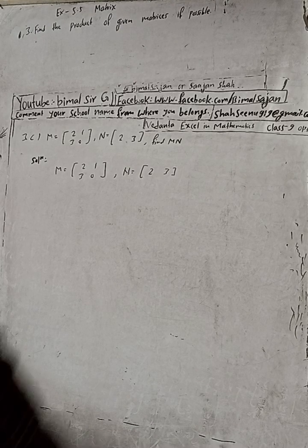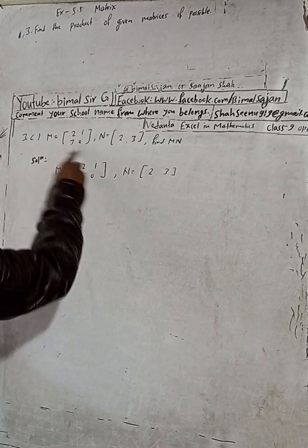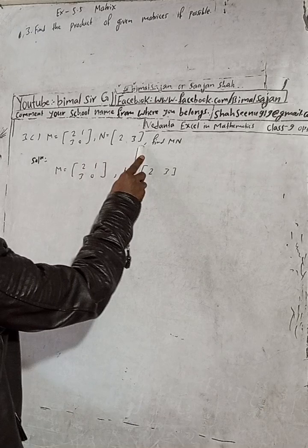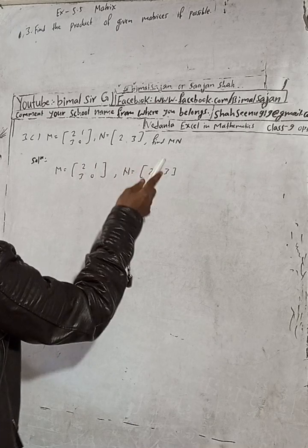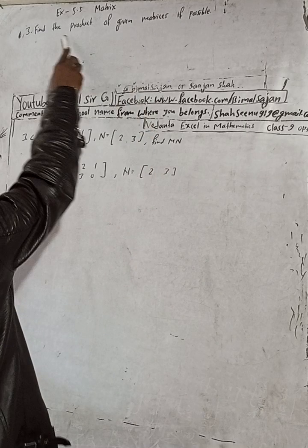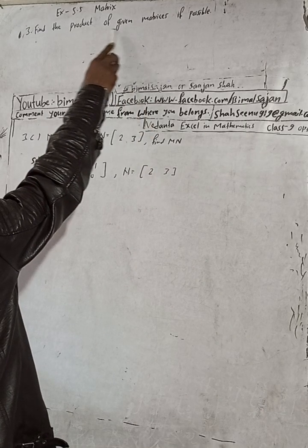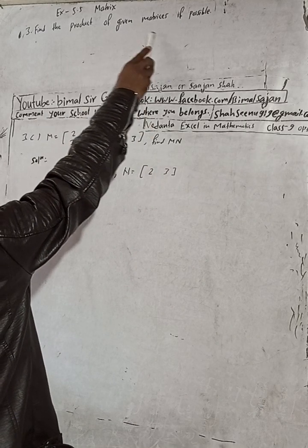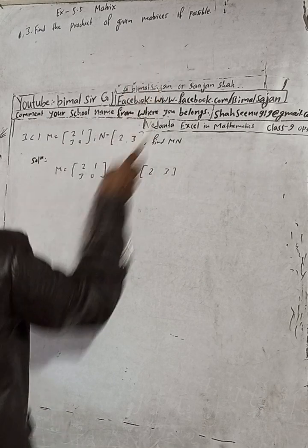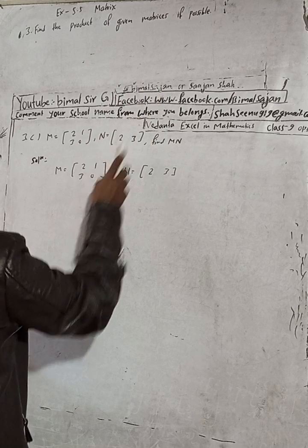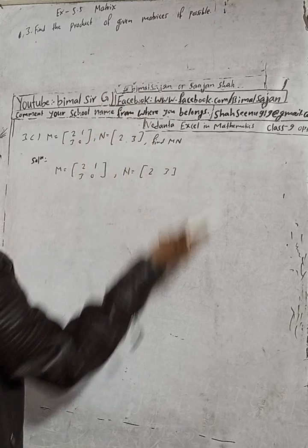Question number 3C: M is equal to this matrix, and N is equal to this matrix. Find MN — the product of these two given matrices, if possible.